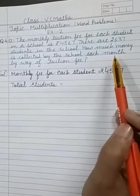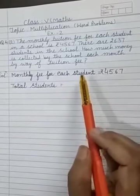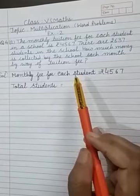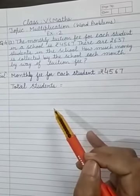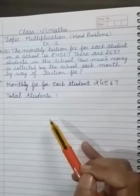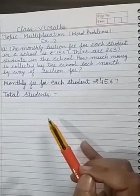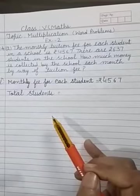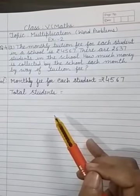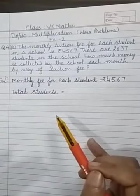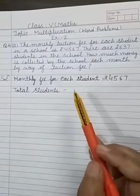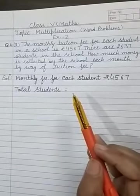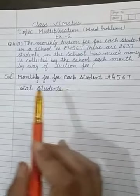By this statement we just come to know that this is the question of multiplication. Because if you want to generalize this question, suppose tuition fee of 1 student is Rs. 100, then what will be the tuition fee of 10 students? What we will do? We will have to multiply it. Then same is the case here.